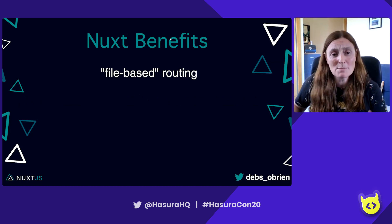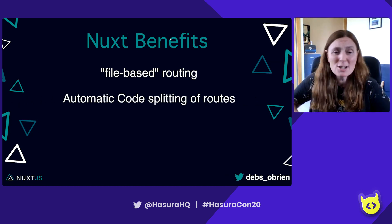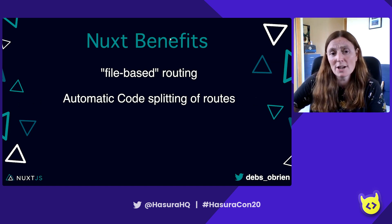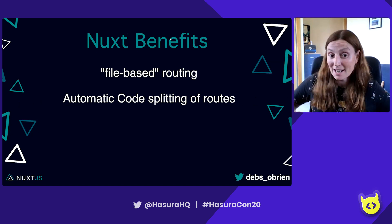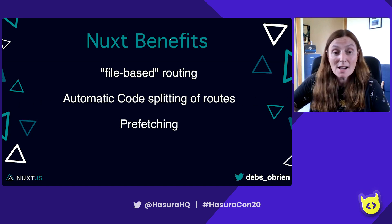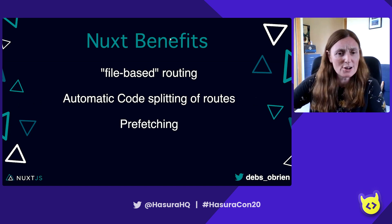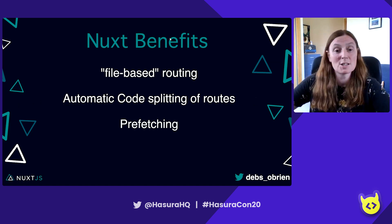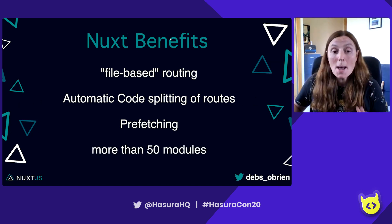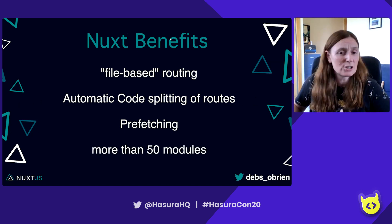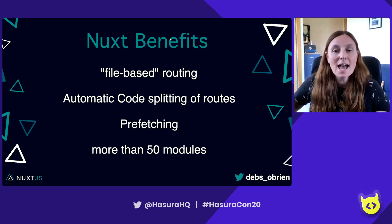You also get automatic code splitting of those routes, so those routes are code-split for you and you're only shipping to the browser the actual page you need. And there's prefetching out of the box - Nuxt checks what pages are in your menu and starts prefetching them. There are also more than 50 modules you can use with Nuxt, such as sitemaps, PWAs, et cetera.